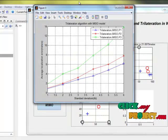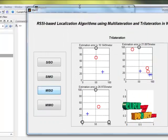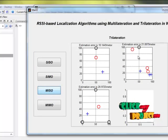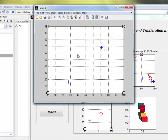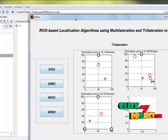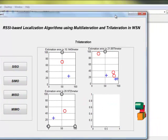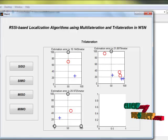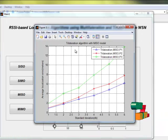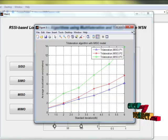Then MISO, which means multi input with single output. It is the graph for trilateration with MISO model.